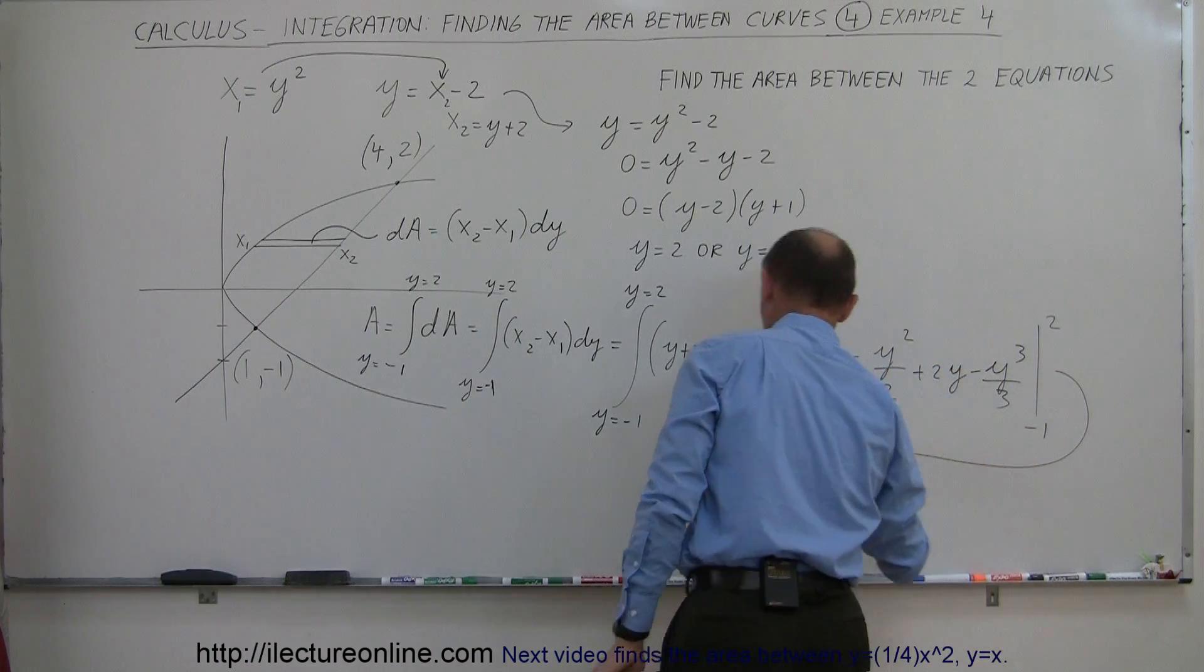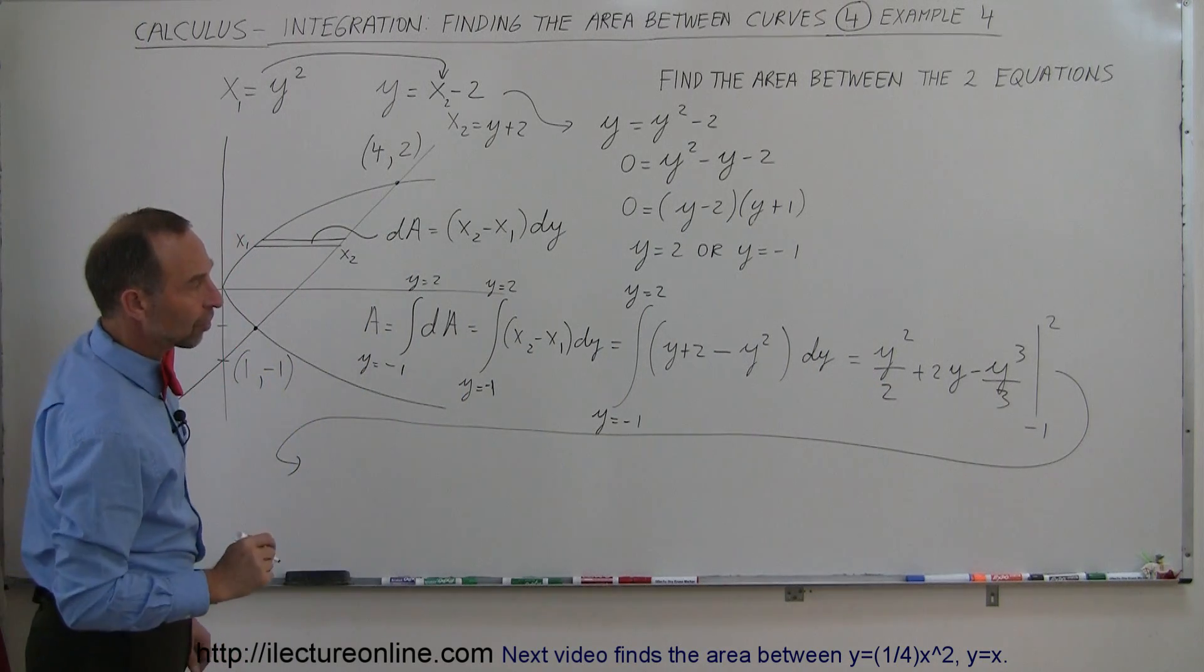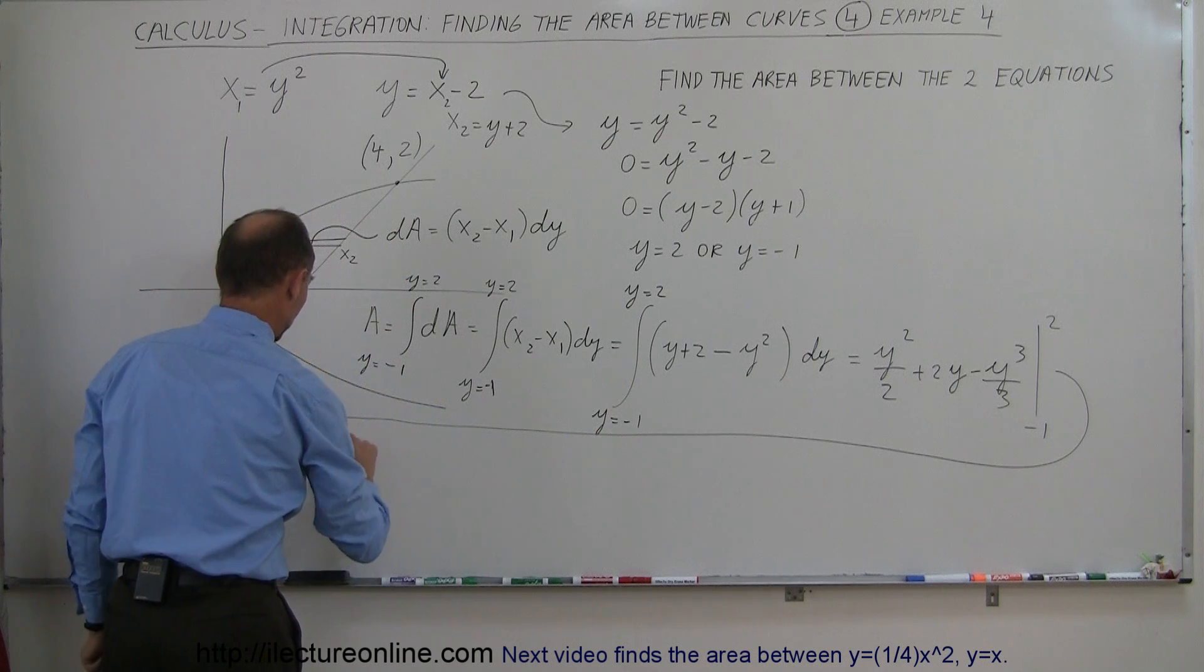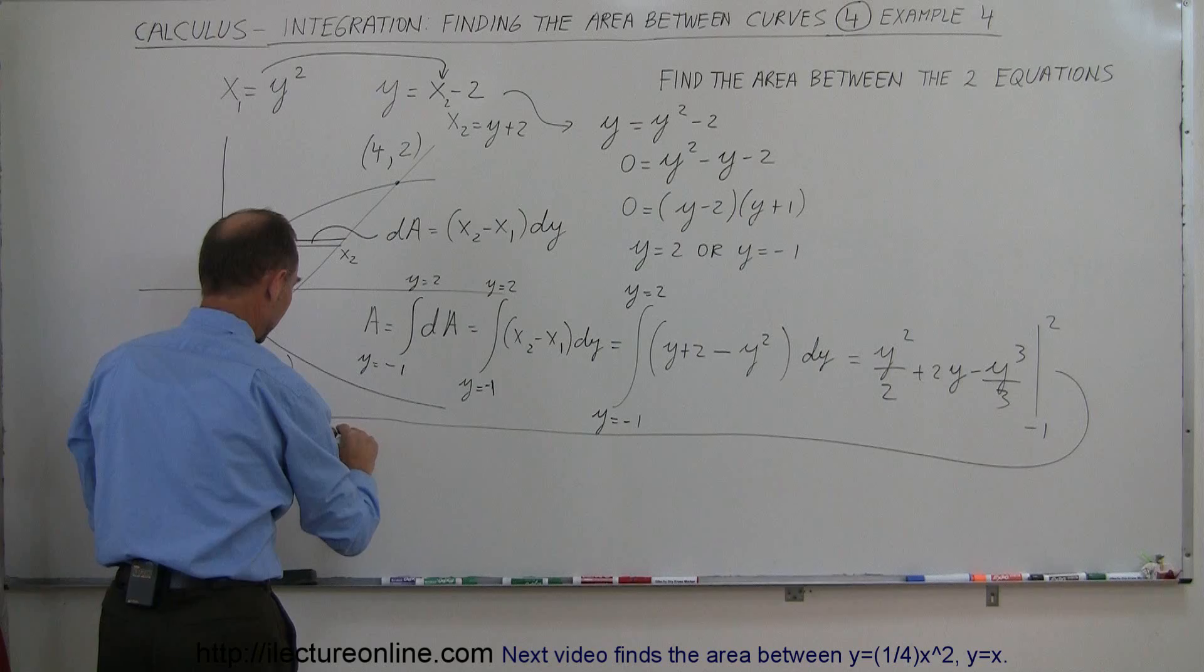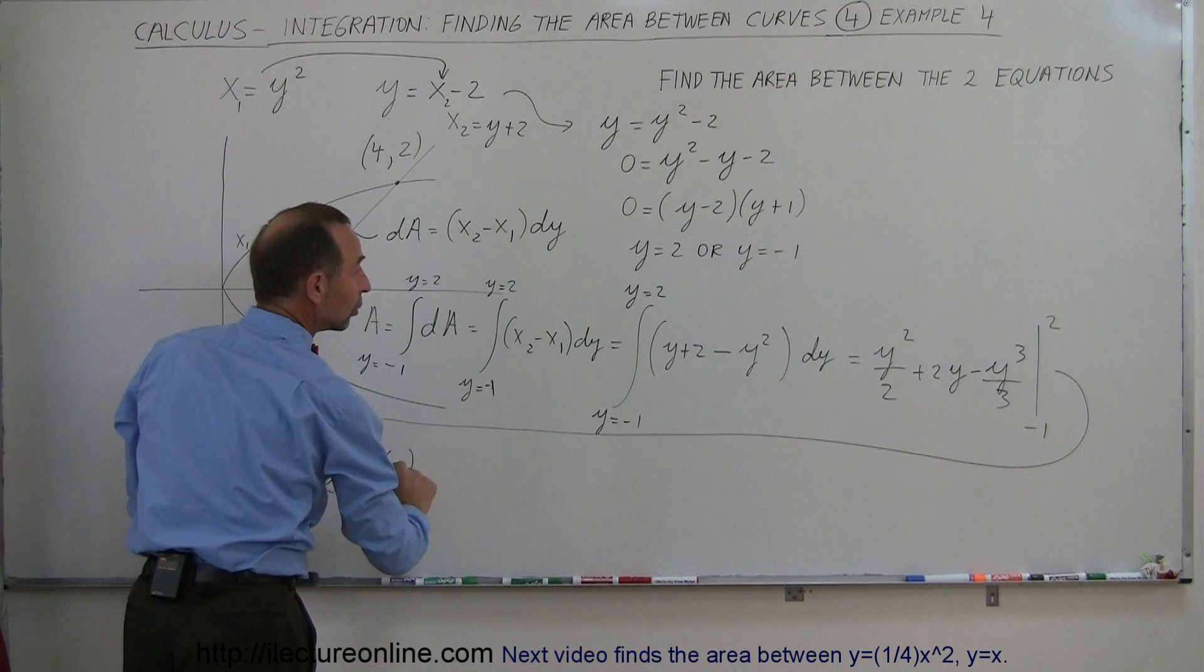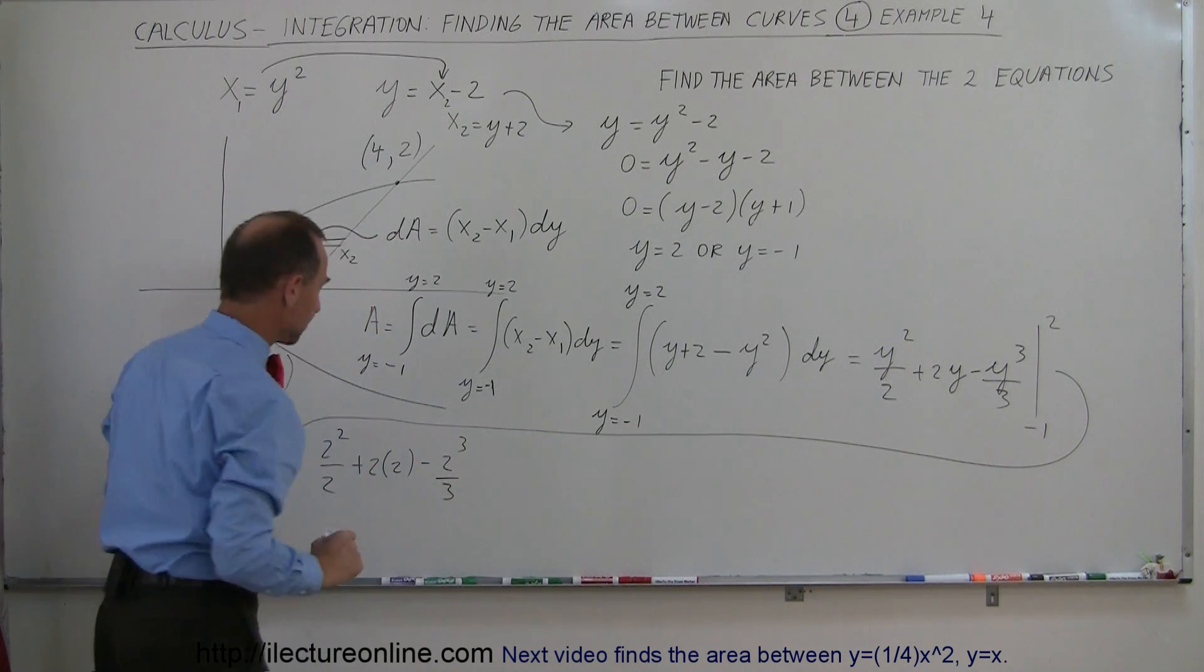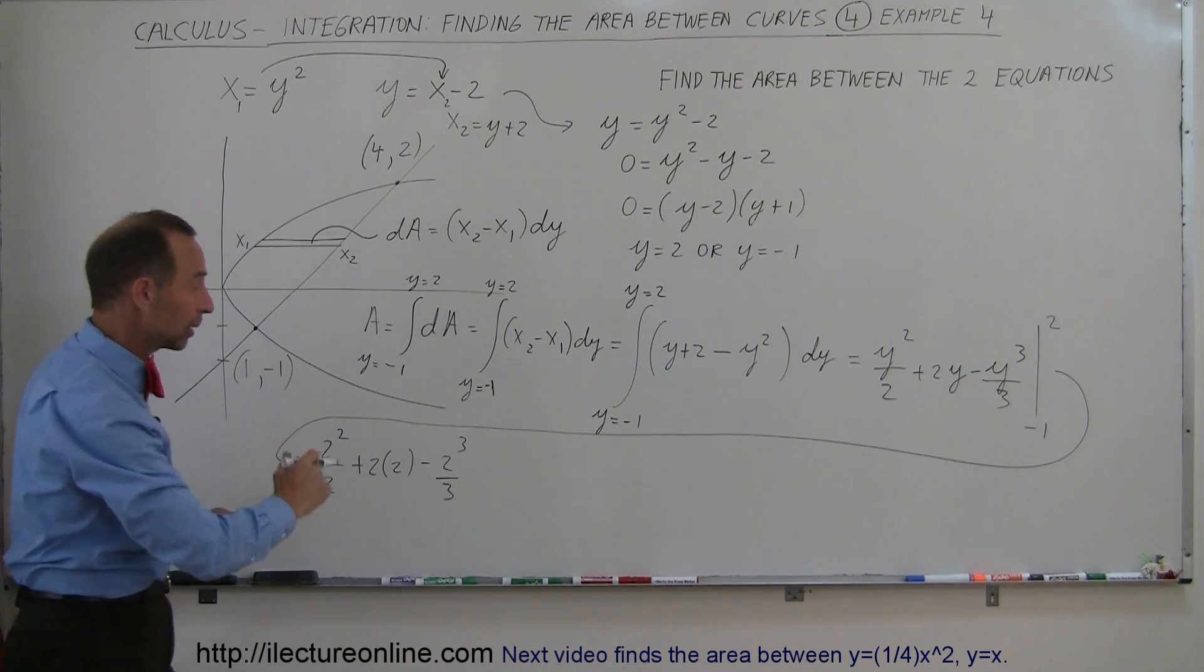So from negative 1 to 2. Okay, let's now come over here and let's evaluate those limits. When I plug in the upper limit, what do I get? I get 2 squared divided by 2. And that's a very small 2 here. Let me do that again. So I plug in a 2 for y and I square that divided by 2 plus 2 times 2 minus 2 cubed divided by 3. All right, so now I plug in the upper limit. I'm now going to subtract when I plug in the lower limit.